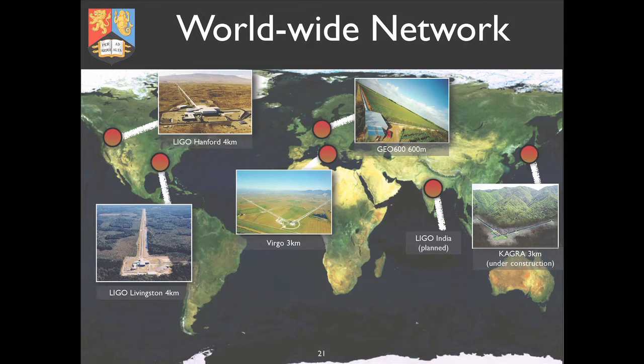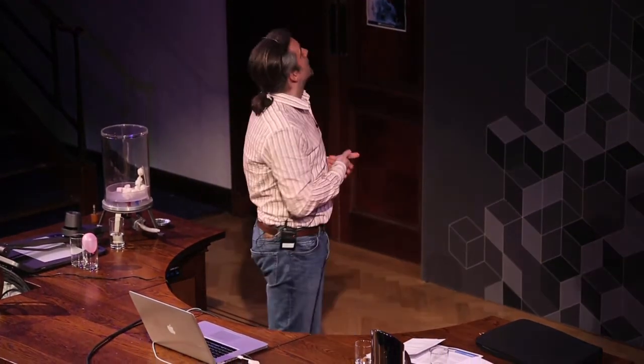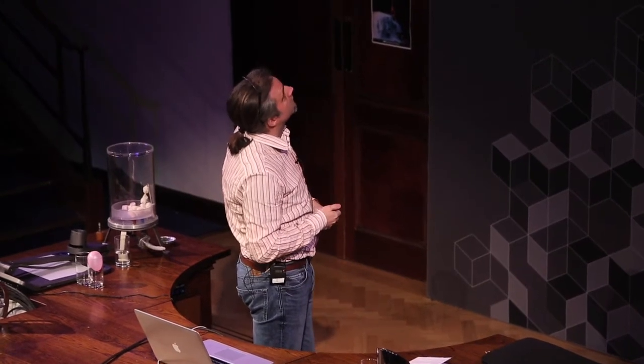There's not just one LIGO detector — LIGO has two. Because we only hear the sound like a cork bobbing on water, we need multiple antennas to triangulate where the signal came from, like a submarine using multiple microphones. With only one antenna we can detect but not locate the source, which isn't useful for astronomy. So we have a network: two LIGO detectors, one in Italy called Virgo, one in Germany called GEO, one under construction in Japan, and one planned for India — plus space projects.